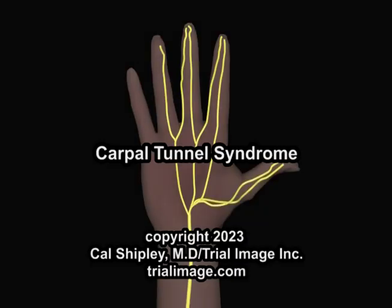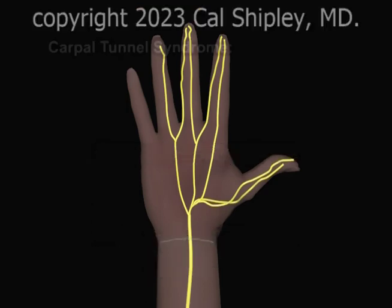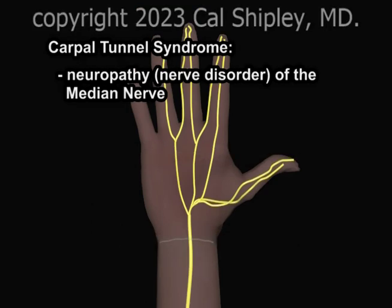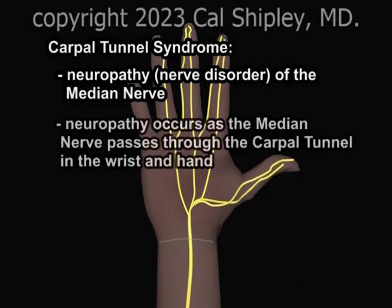This is Dr. Cal Shipley with a review of Carpal Tunnel Syndrome. Carpal Tunnel Syndrome refers to a neuropathy, or nerve disorder, of the median nerve. Carpal Tunnel Syndrome is so named because the nerve dysfunction occurs as the median nerve passes through the carpal tunnel in the wrist and hand.